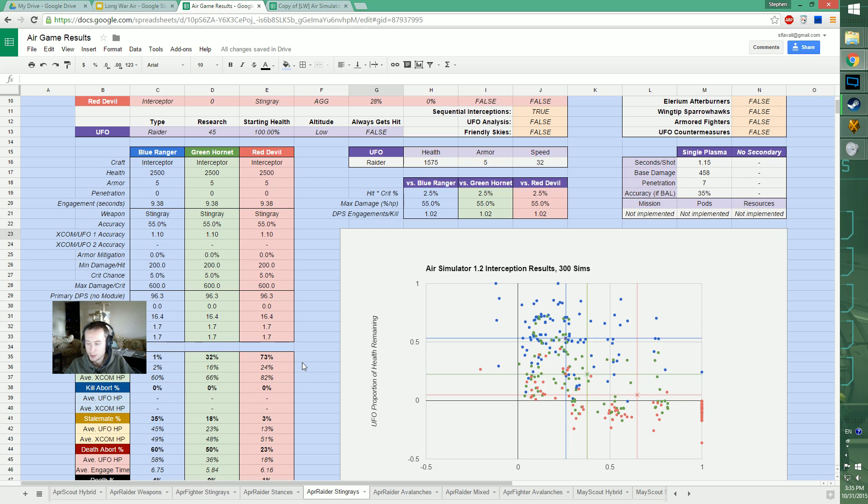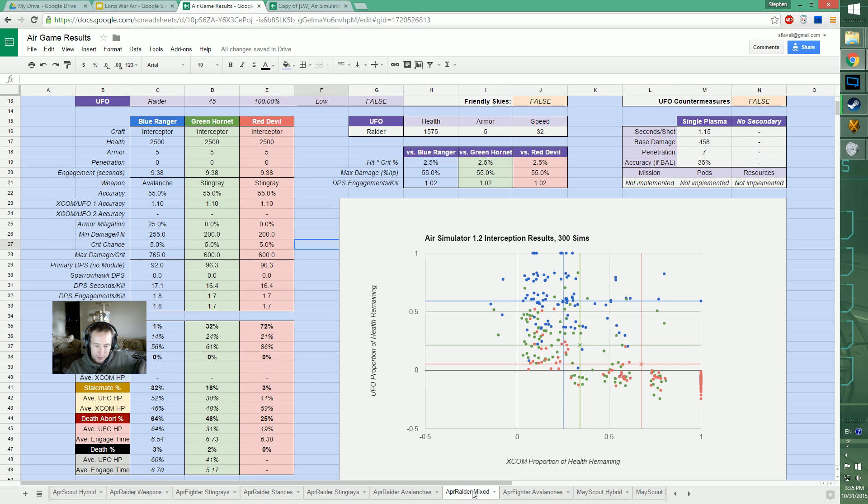However, we have a situation where Stingrays are very consistently overkilling by a good amount. The clusters for Stingrays go one, two, three, four, five, six, and then seven here, and the seventh cluster is a good amount past zero health.